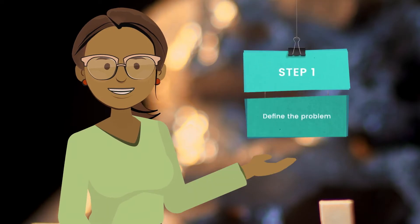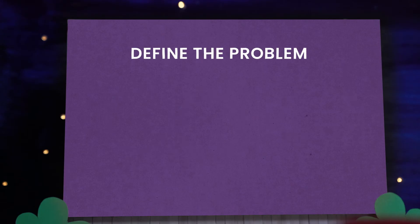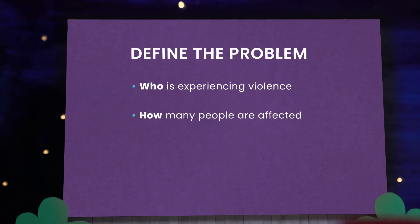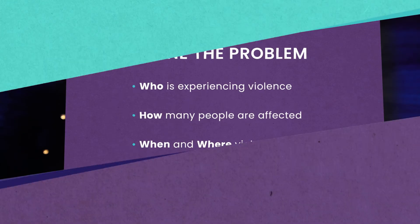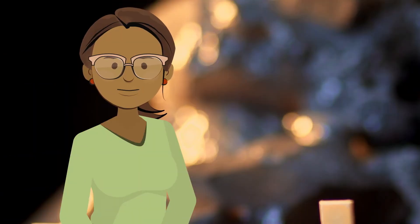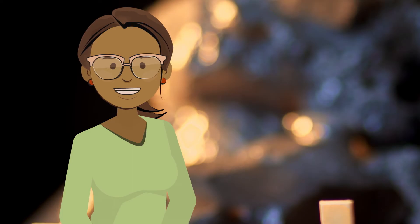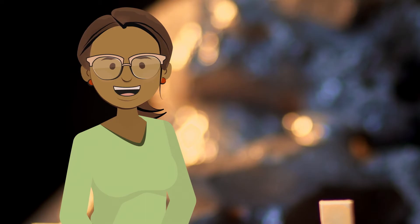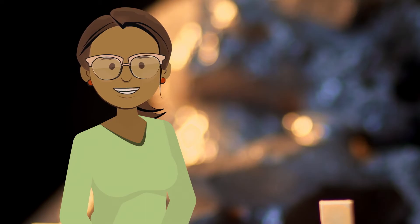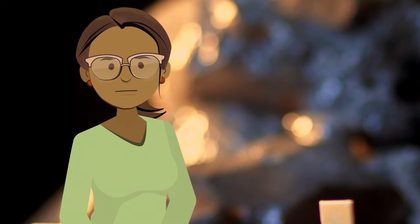Step one is to define the problem we are facing. This involves collecting data to determine who is experiencing violence, how many people are affected, when and where violence happens, and how often it occurs. When step one is completed, you should have answers to who, what, when, where, and how. These data may also reveal trends so you can see what is happening to the problem over time.